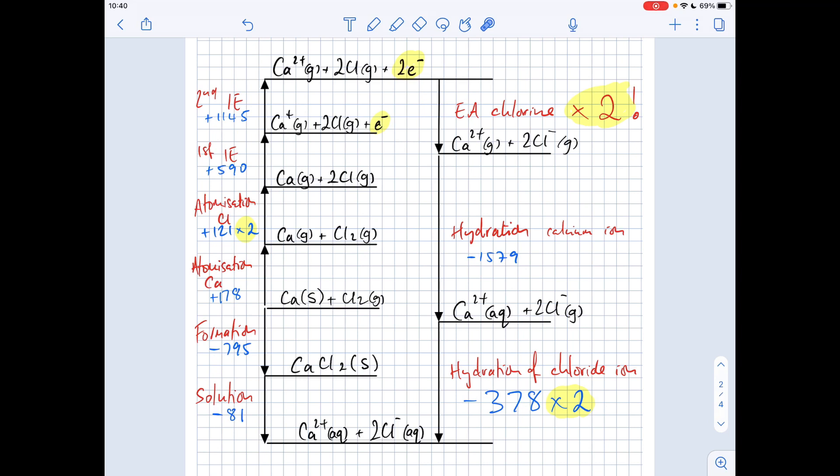So you imagine in most of the Born-Haber cycles that you've drawn, you've then gone from gaseous ions to the solid lattice, and you use that to calculate the lattice enthalpy. So this is slightly different because what we're going to do now is we're going to hydrate the two ions. So this stage here is the hydration of the calcium ion. So that's going to get us to calcium 2+ aqueous. Two gaseous chloride ions remain.